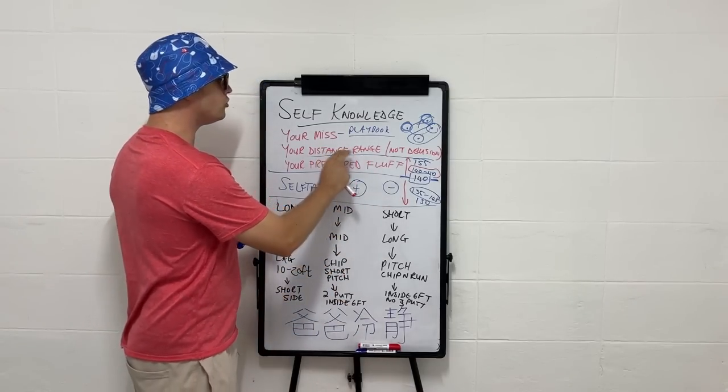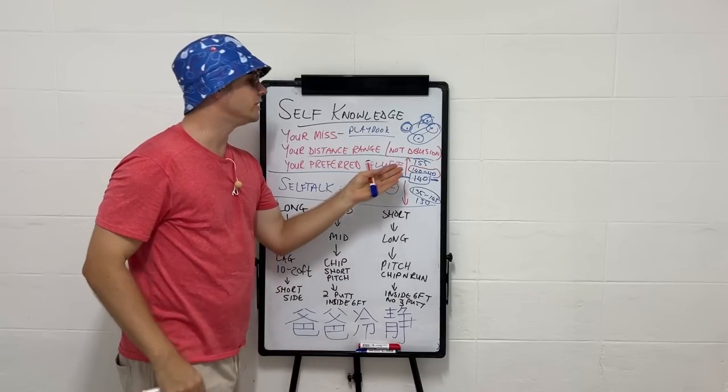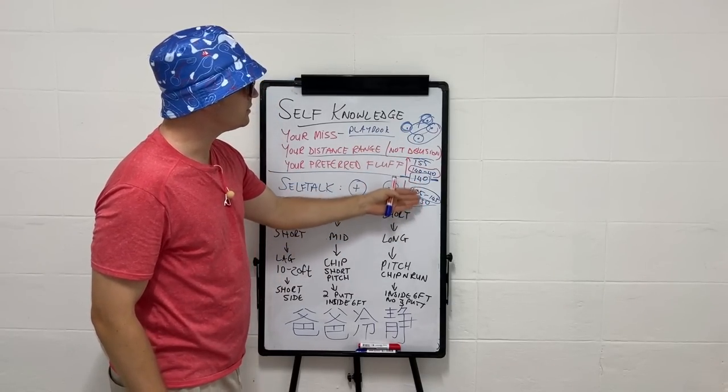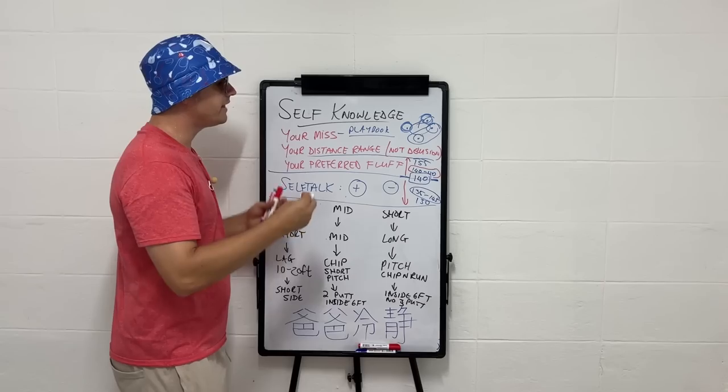So know your distance range, not the delusion. The delusion and the ego gets in the way of hitting it correctly, hitting the correct club, hitting a club that gets the job done.